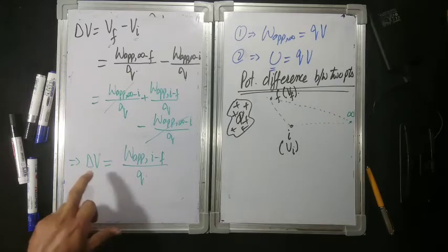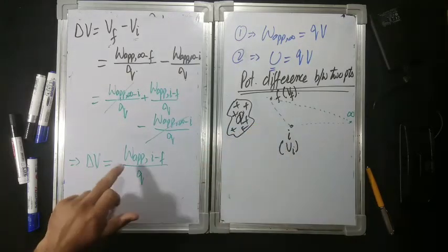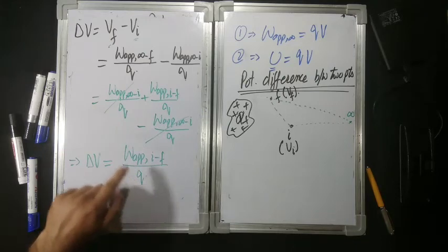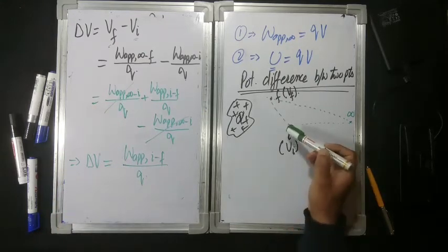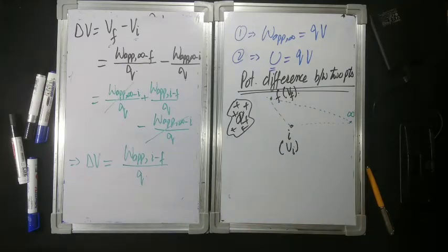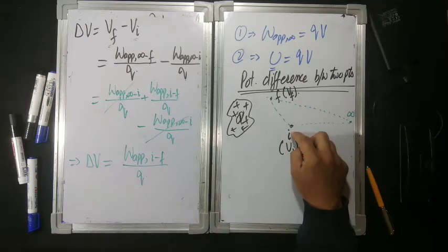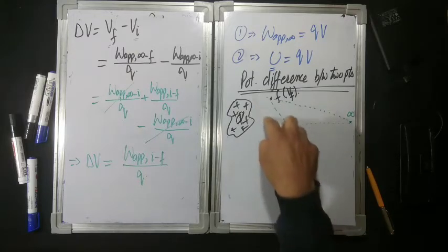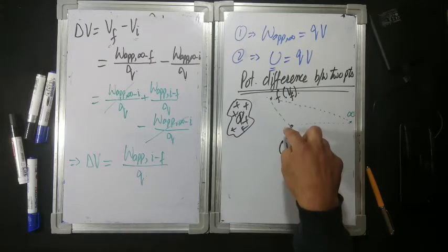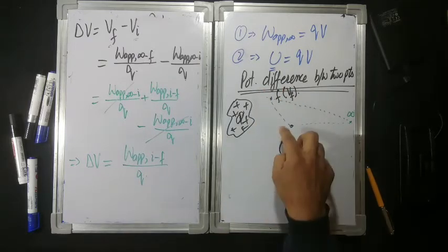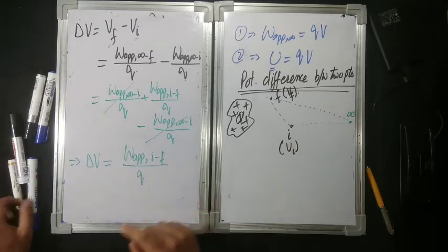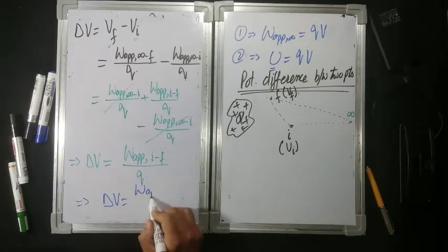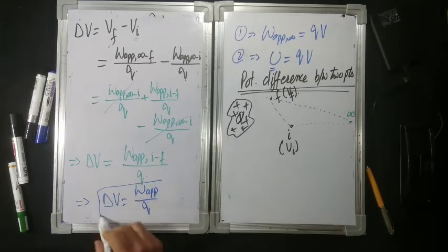So this means delta V is equal to work done from I to F divided by Q. Potential difference between two points is the work that we have to do — external agency — in taking a unit positive charge from I to F. Simple. Agar sirf potential ki baat ho rahi hai at a particular point, to hai work done in bringing a unit positive charge from infinity to that point. Agar potential difference ki baat chal rahi hai between two points, then it is work done per unit charge from I to F. So delta V is equal to work done per unit positive charge.